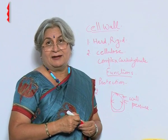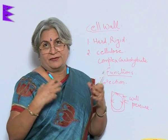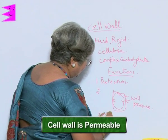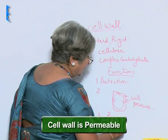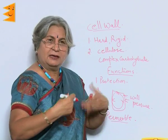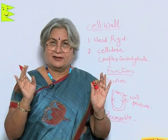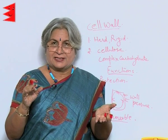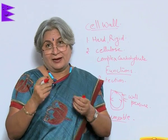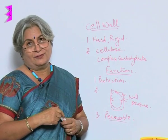The cell wall is an additional layer which provides protection, prevents bursting of the cell, and it is permeable — whatever has permeated through the cell membrane is then allowed to pass out. It is like an airport: the first security check is at the cell membrane, and then there is an additional check at boarding. The cell wall is that additional protection.